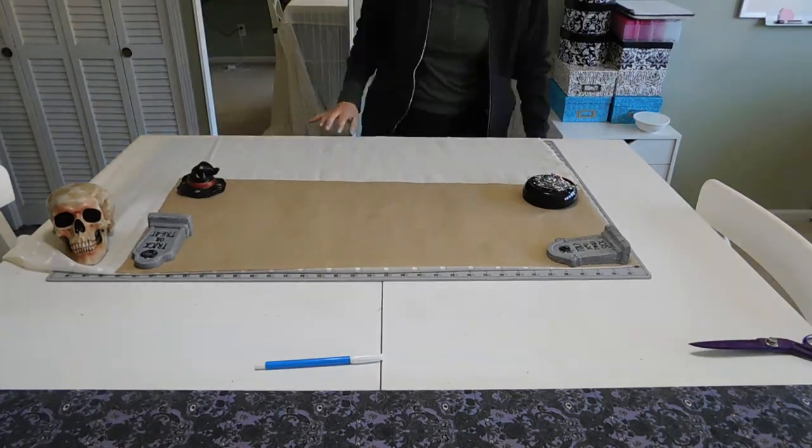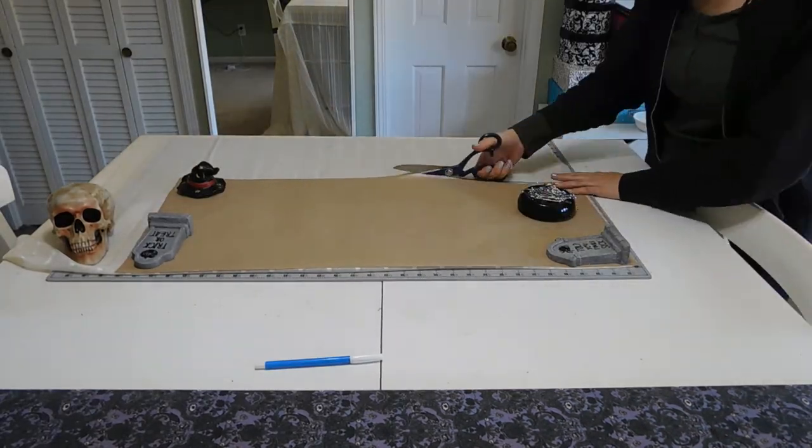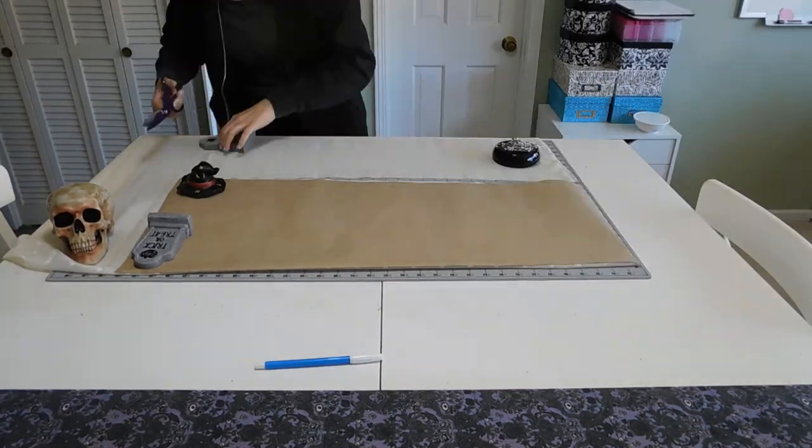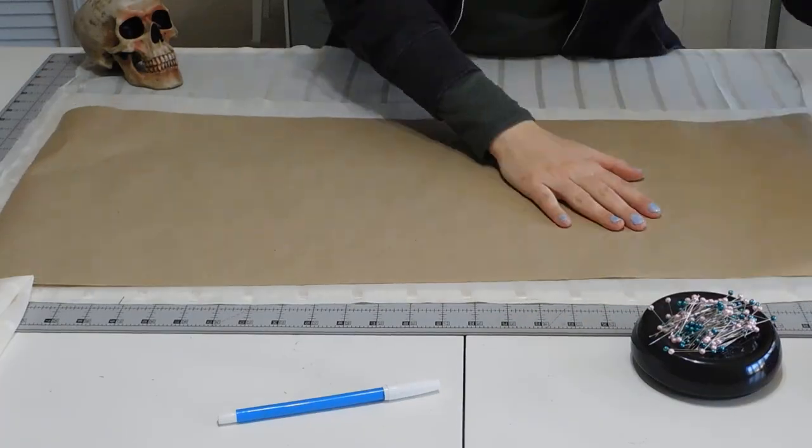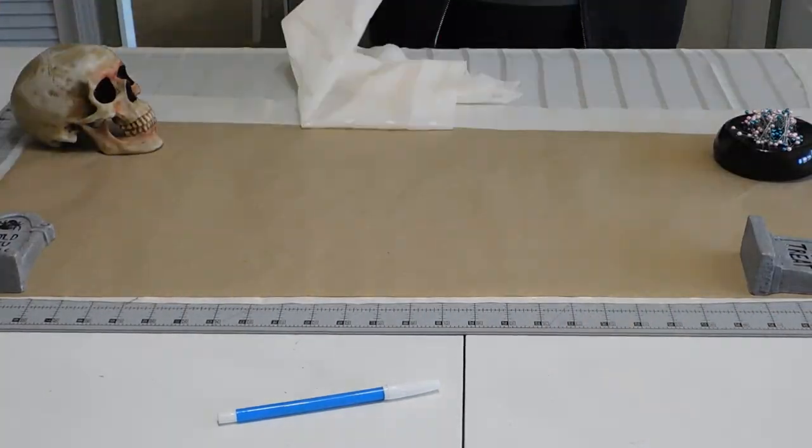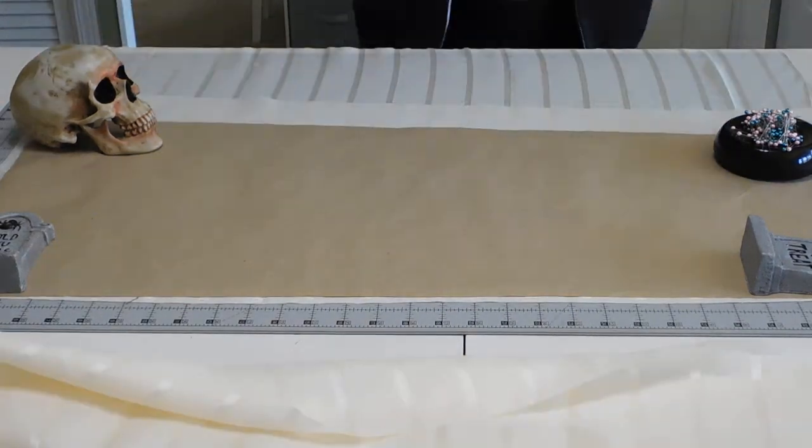After making my pattern I cut the front panels out on the fold. Then I line up the lines from the front panel to place the pattern on the salvage for the back two panels. I cut it out on the salvage to make it easier to sew up in the back later.